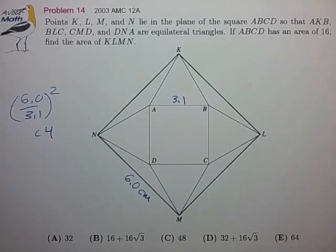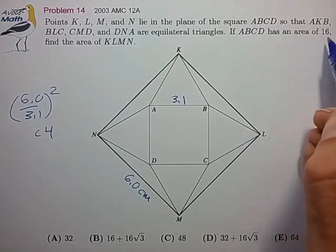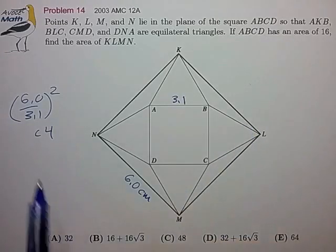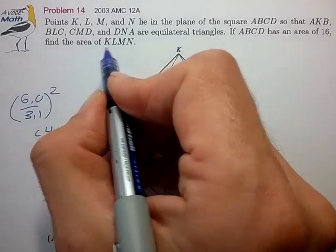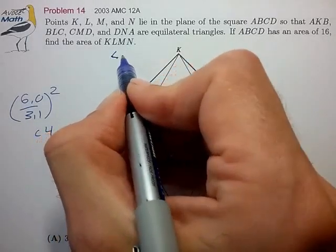So from that we can make a pretty quick estimate as to the area of the outside square because the area of the inner square is 16. We know that the ratio is a little less than 4, so we know the answer of the area of KLMN is just a little bit less than 64.